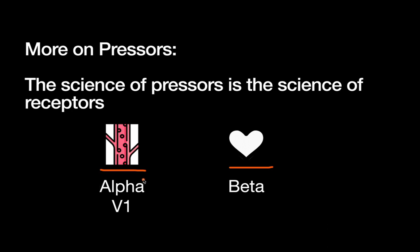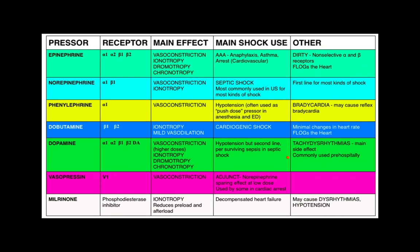Here's a table from a free online medical resource linked in the show notes. Starting with norepinephrine: it has alpha effects — acting on the peripheral vasculature to cause vasoconstriction — and also some beta effect providing inotropy to the heart. It's used in septic shock and most other forms of shock, and is generally first line. That's why we've focused on it so much.